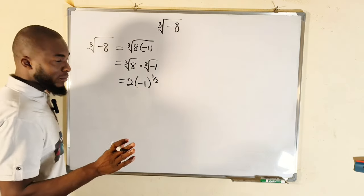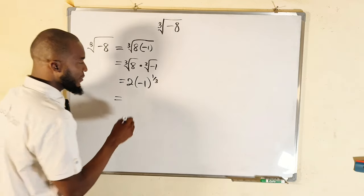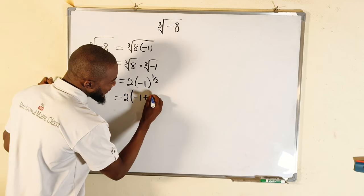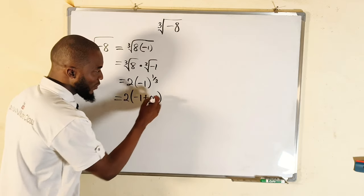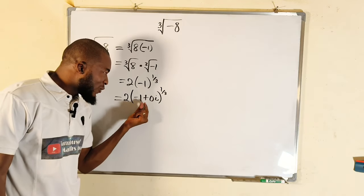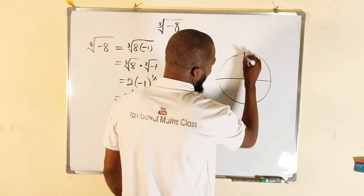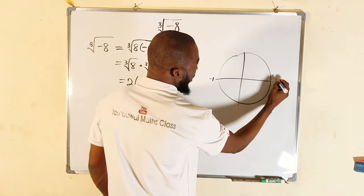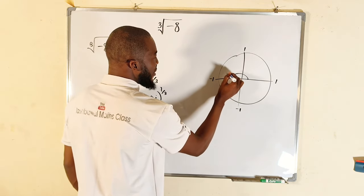The cube root of negative one is the same as negative one raised to the power of one third. From complex numbers, I can write negative one as negative one plus 0·i, where the imaginary part is zero. We raise this to the power of one third, then transform negative one + 0i into its polar form. On the unit circle, the radius is one, and the angle corresponding to negative one is π.